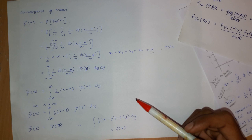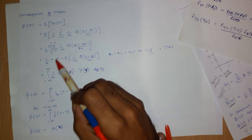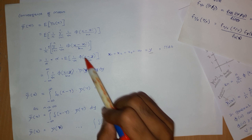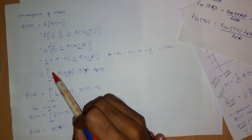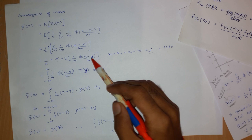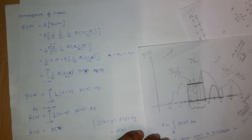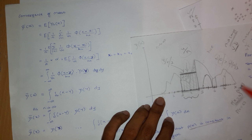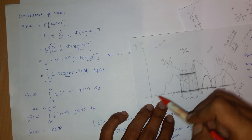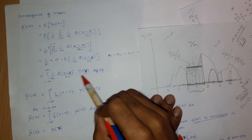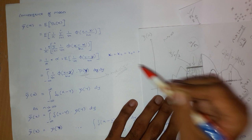We get the expectation of this, which is nothing but the integration from minus infinity to plus infinity — 1 by V_n as it is — times the distribution of Y. As previously mentioned, all of these samples have come from the true distribution, so there is no subscript n over here. This is the true distribution that we have — the true distribution of the likelihood.